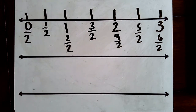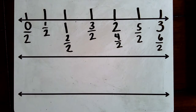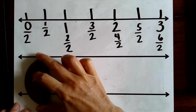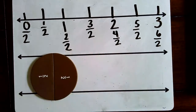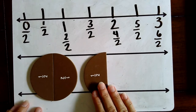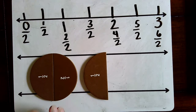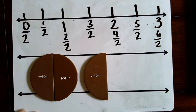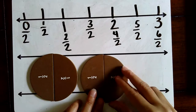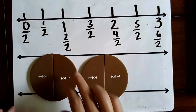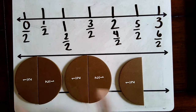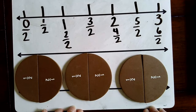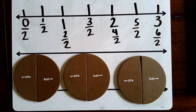Now let's look at our circle fraction models. We have zero halves, then one half, then two halves put together — the same as one whole. Three halves: one, two, three halves. Guess what three halves is equal to? One and one half — one whole and one half is the same as three halves. Let's add another half: four halves is the same as two wholes. Then five halves is the same as two wholes and one half. And six halves is the same as three wholes, and that matches up on the number line — so we know we have it correct.